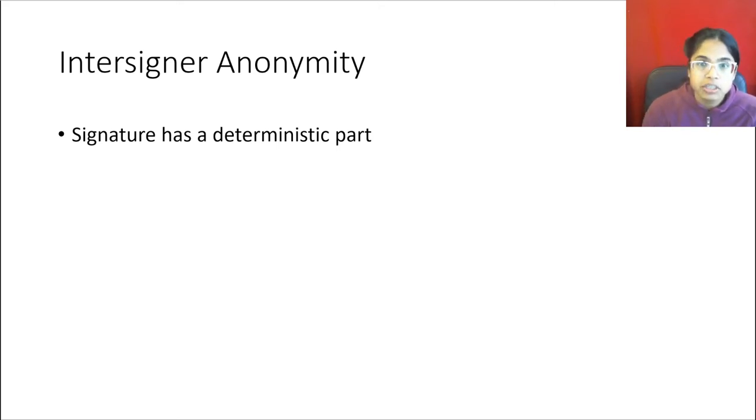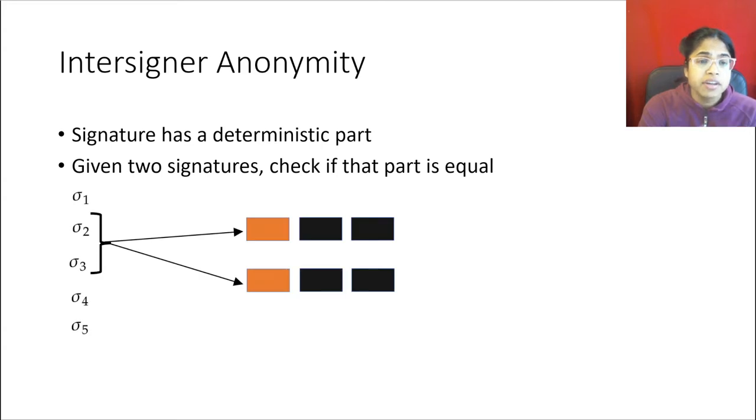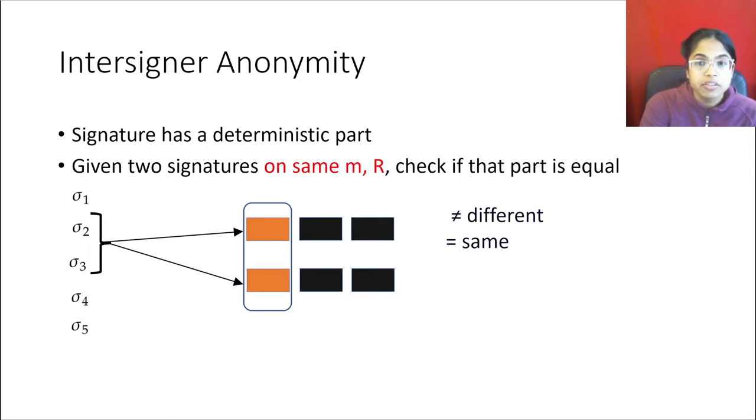This is the way that we got thresholdization in our paper with inter-signer anonymity, and we did it by forcing our ring signature to have a deterministic part to it. With that deterministic part, signers could just sign by themselves and a verifier could check to see if they came from different people without revealing their identities. So you start with this deterministic part and then a verifier given two signatures just checks if that part is equal. For example, let's say that a verifier sees a list of five signatures. Then he can parse any two of them and check the deterministic part and see if that part is different or the same and conclude that it came from different or the same signer.